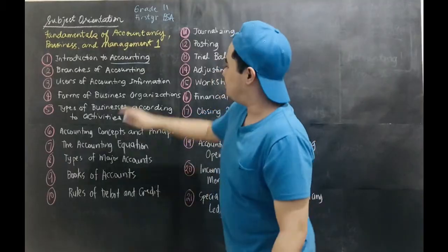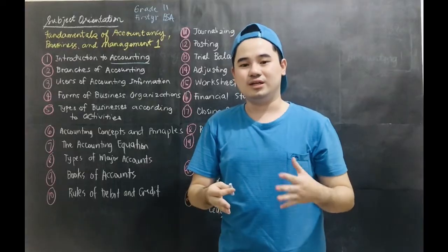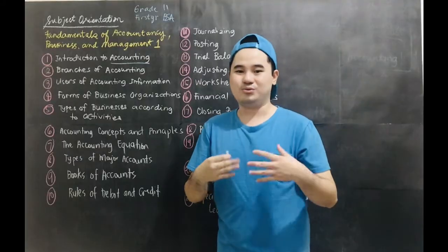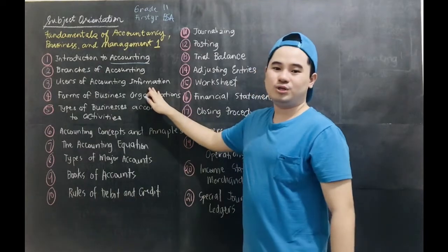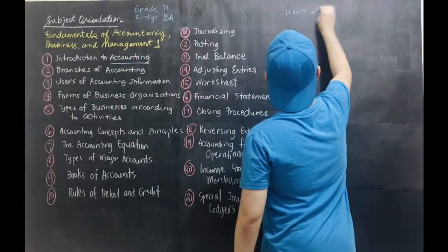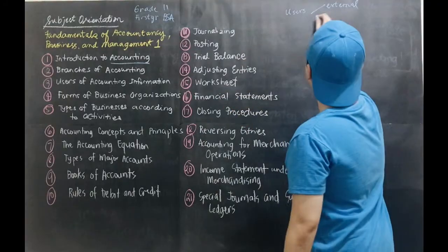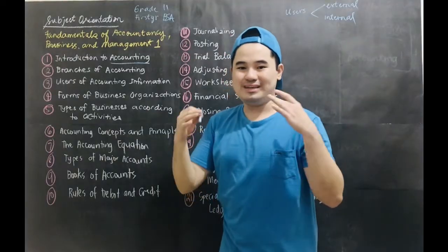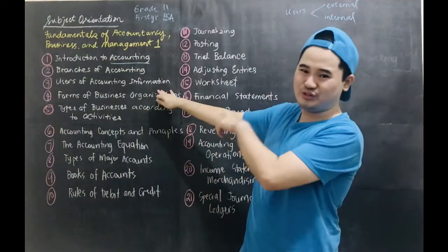Then the second topic would be the branches of accounting. There are different branches of accounting that we need to know, like financial accounting, management accounting, or cost accounting. Then we will also be talking about the users of accounting information. We have the external users of accounting information and the internal users of accounting information. So we will be tackling them in detail in this video.